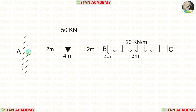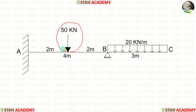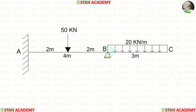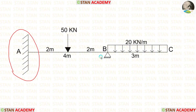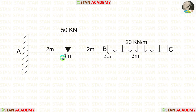In this beam, there is a span AB and also an overhanging span BC. In span AB, there is a point load of 50 kilonewton acting at the center. In the overhanging span BC, there is a uniformly distributed load of 20 kilonewton per meter. At point A, there is a fixed support, and at point B, there is a hinged support. Span AB is 4 meters long and the overhanging span BC is 3 meters long.